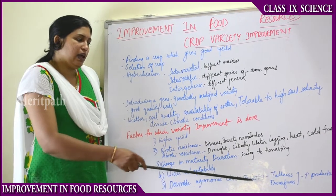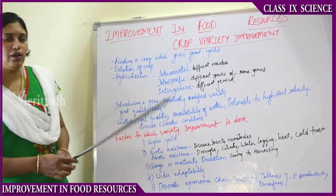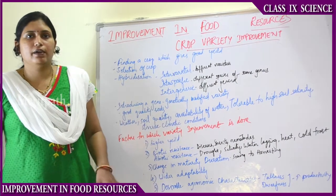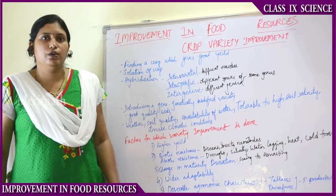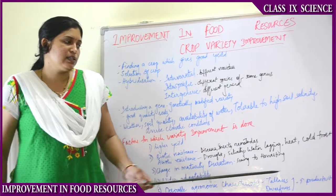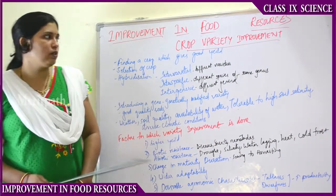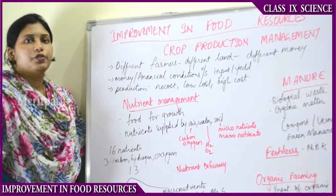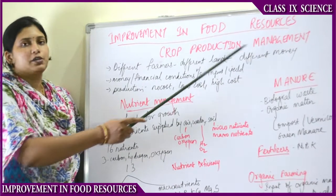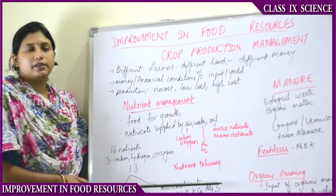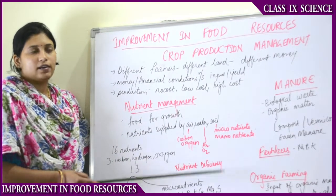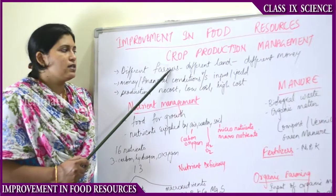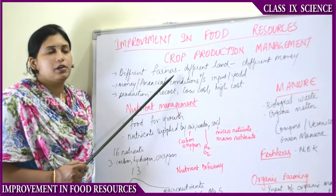Desirable agronomic qualities like tall plants or dwarf plants - sometimes tall plants are required and sometimes dwarf plants - increase the productivity of the crop. This covers crop variety improvement. Now we deal with crop production management. There are different types of farmers - some poor, some rich - with different quantities of land and different levels of money.